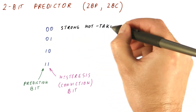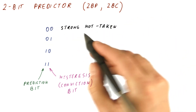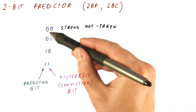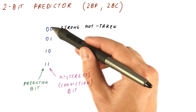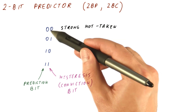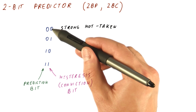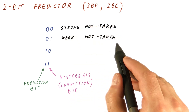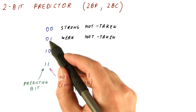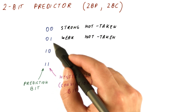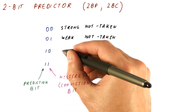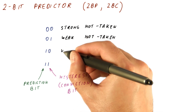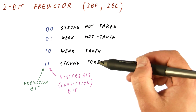The state 00 is treated as a strong not-taken state, meaning we predict not taken and are fairly convinced that not taken is the dominant behavior of this branch. The 01 state is the weak not-taken prediction state — we still predict not taken, but we are less sure. Similarly, for the predict-taken states, we have weak taken and the strong taken state.